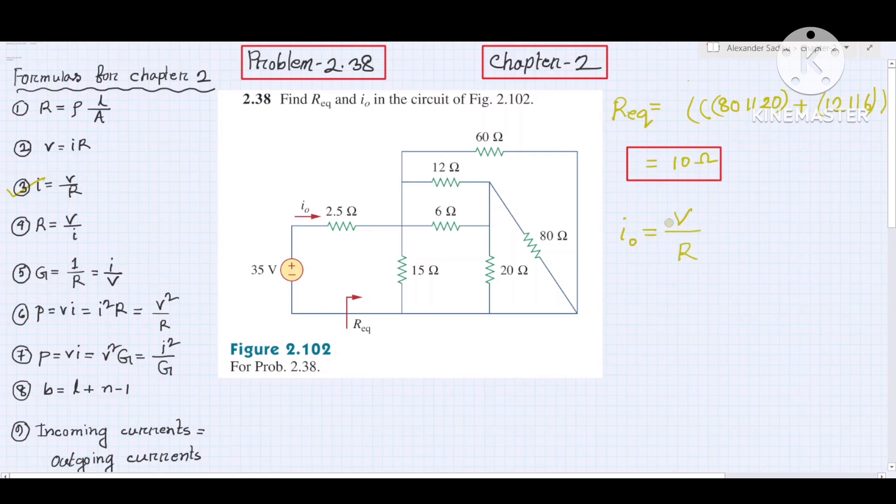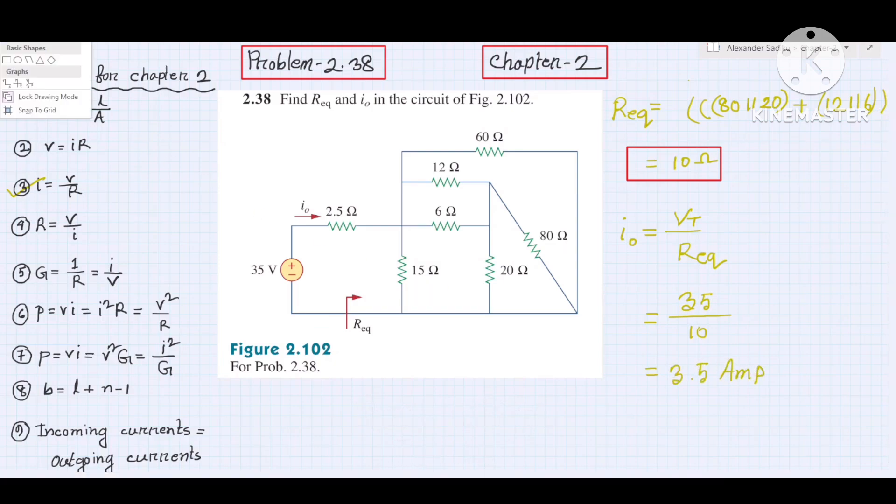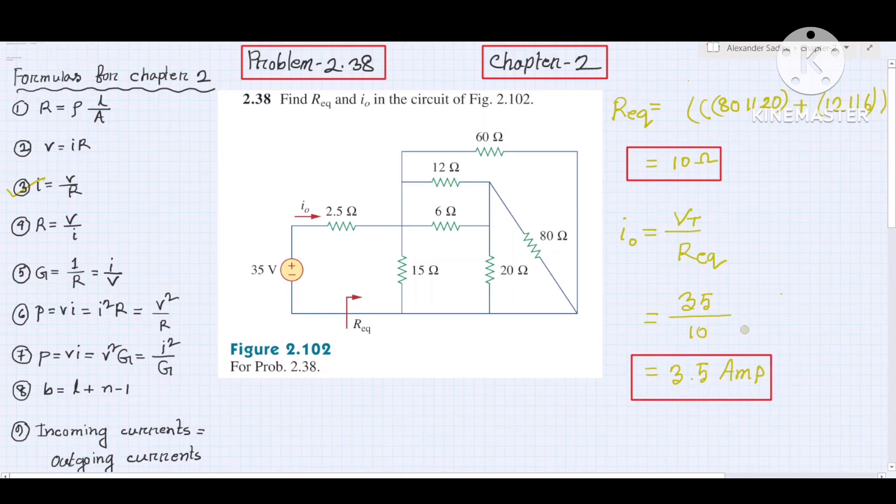The total current is total voltage divided by total resistance, which is Req. The circuit has 35 volt, so 35 divided by Req, which is 10. 35 divided by 10 equals 3.5. This is the current in amperes. So this is our answer for i naught. So that's all for today, see you in the next class.